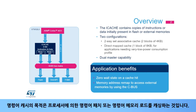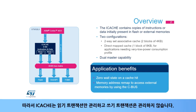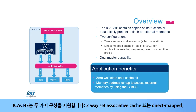The purpose of the instruction cache is to cache instruction fetches or instruction memory loads coming from the processor. As such, iCache only manages read transactions and doesn't manage write transactions. The iCache supports two configurations: two-way set-associative cache or direct mapped.